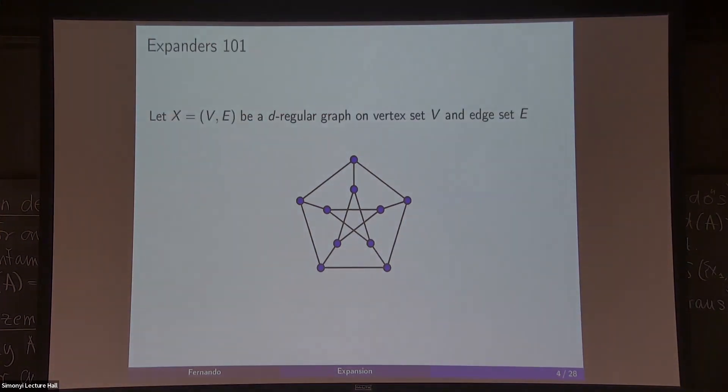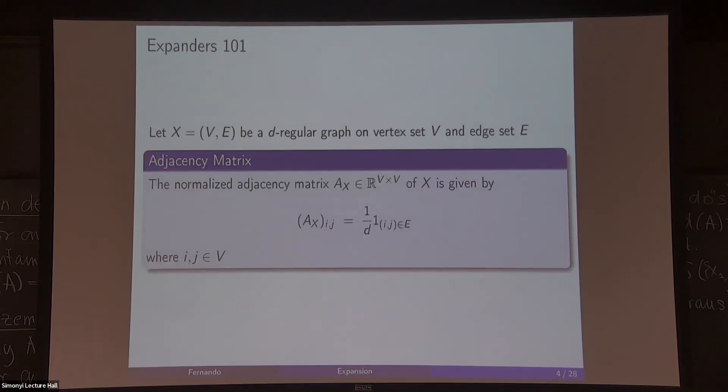Let's start from the beginning. A graph here for us is a collection of vertices and edges. Let's assume for simplicity that you have something that's regular, so the number of edges incident in each vertex is the same, in this case it's three. It's very common to associate to a graph the adjacency matrix, or in this case the normalized adjacency matrix. It's a matrix indexed by the vertices, and for a pair i,j we put a one over d if it's an edge and zero otherwise.